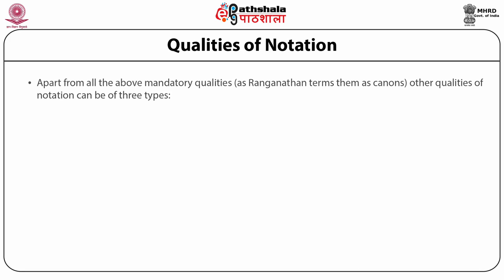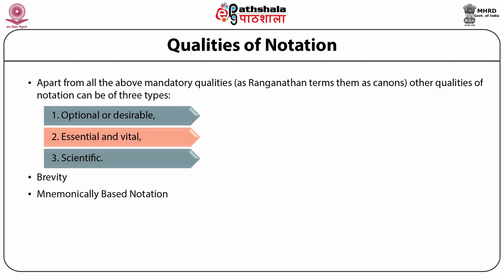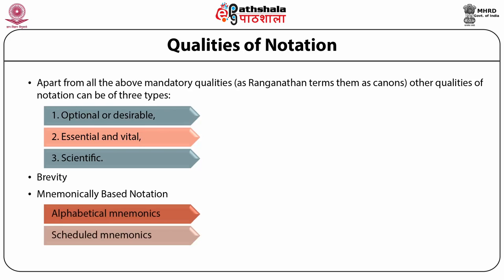Apart from all the above mandatory qualities — which Ranganathan terms as canons — other qualities of notation can be of three types: optional or desirable qualities, essential and vital qualities, and thirdly, scientific qualities. Brevity is an optional quality. Mnemonics based on notation is again an optional quality, though somewhat scientific. There are three types of mnemonics as given by S.R. Ranganathan: alphabetical mnemonics, schedule mnemonics, and seminal mnemonics.